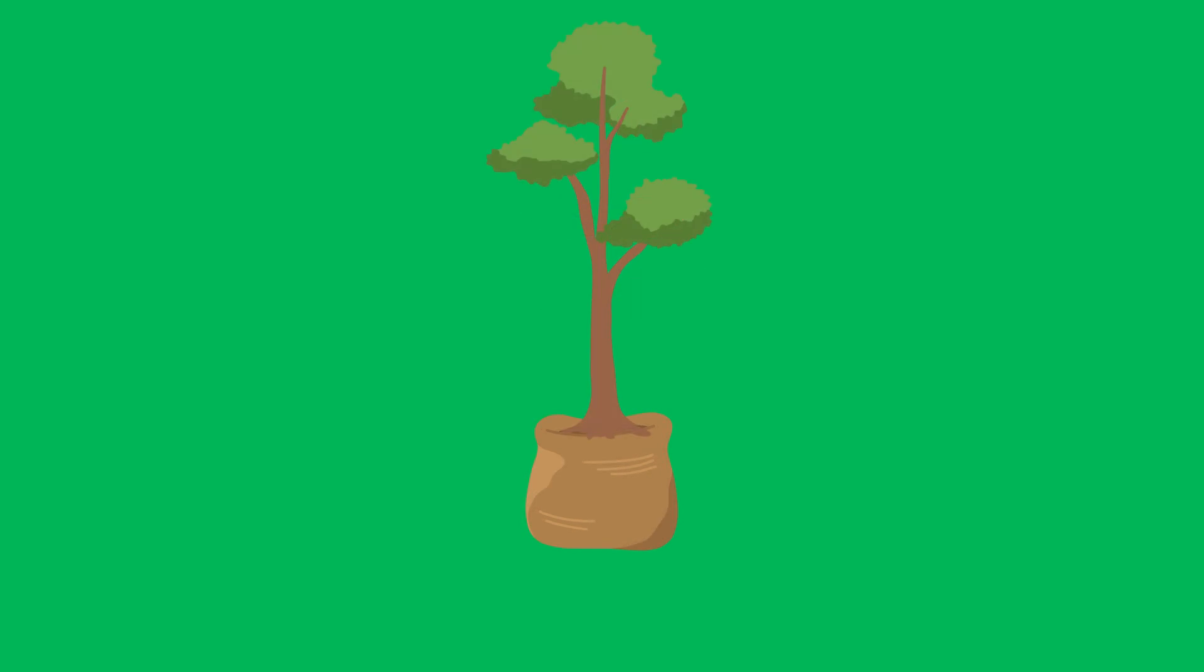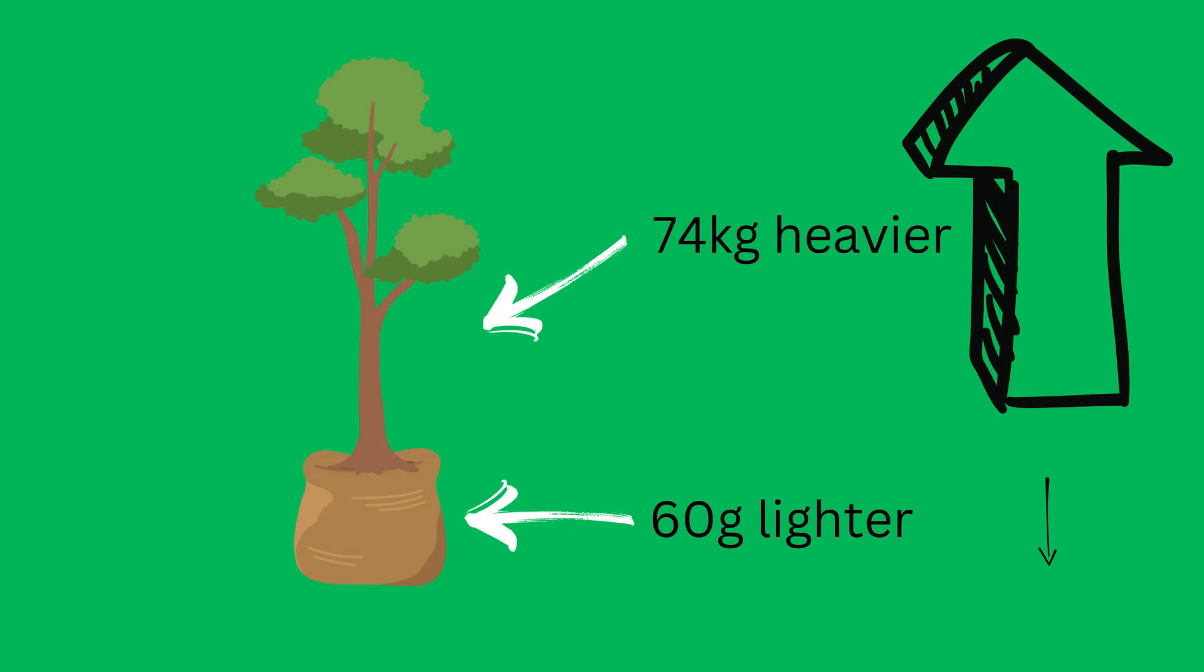He found the tree had increased in mass by 74 kilograms, but the mass of the soil had only decreased by about 60 grams. This was pretty strong evidence that the mass of the tree does not come from the soil.